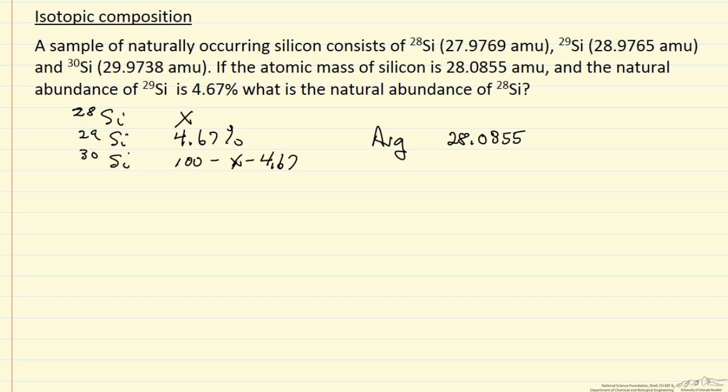Essentially, we need to determine how much of each isotope adds together to give this average. That means x times the atomic mass of silicon-28, which is 27.9769, plus 4.67 times the atomic mass of silicon-29,